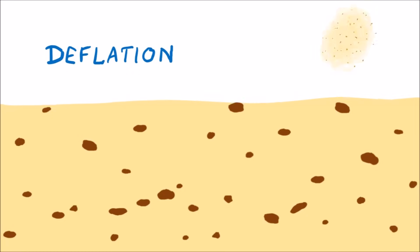Deflation happens when fine, loose sediment is picked up and carried away by the wind. Arid landscapes are very vulnerable to this as they lack any moisture or vegetation to hold the soil and sand together.